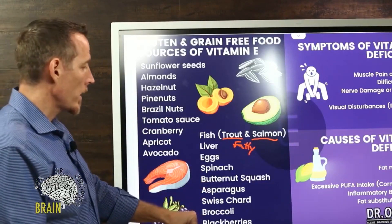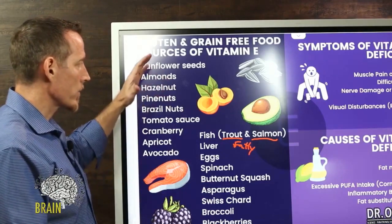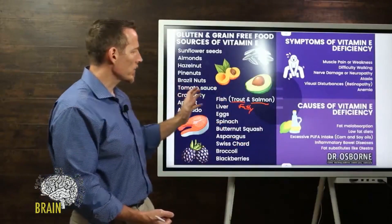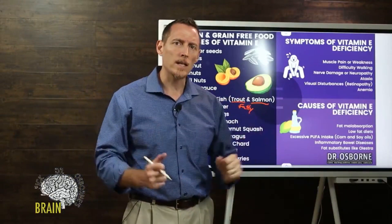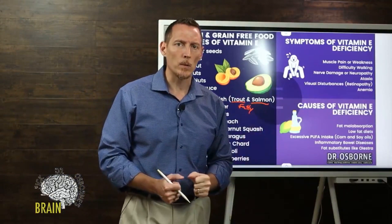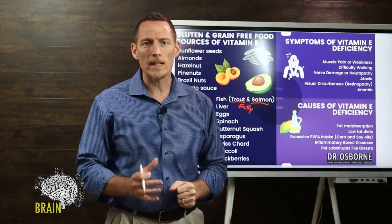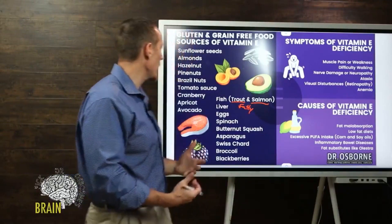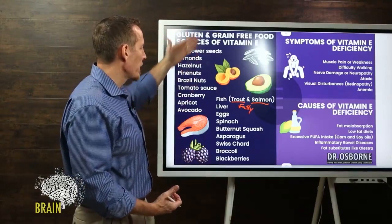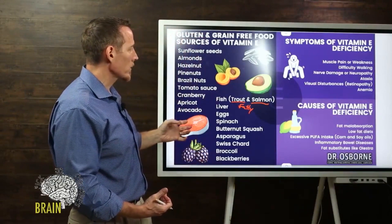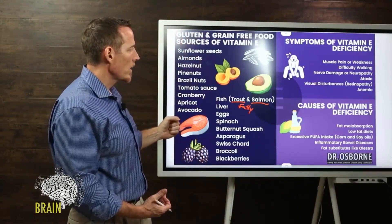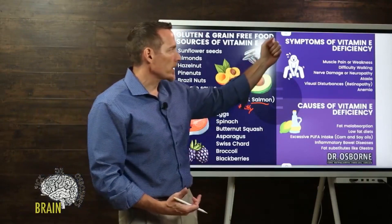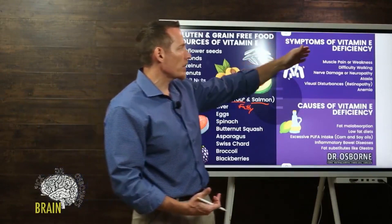Broccoli and blackberries are also good sources of dietary vitamin E. A study showed that up to 90 percent of people in the United States don't get adequate vitamin E in their diets on a daily basis, so incorporating some of these healthier foods into your diet can make a real difference.